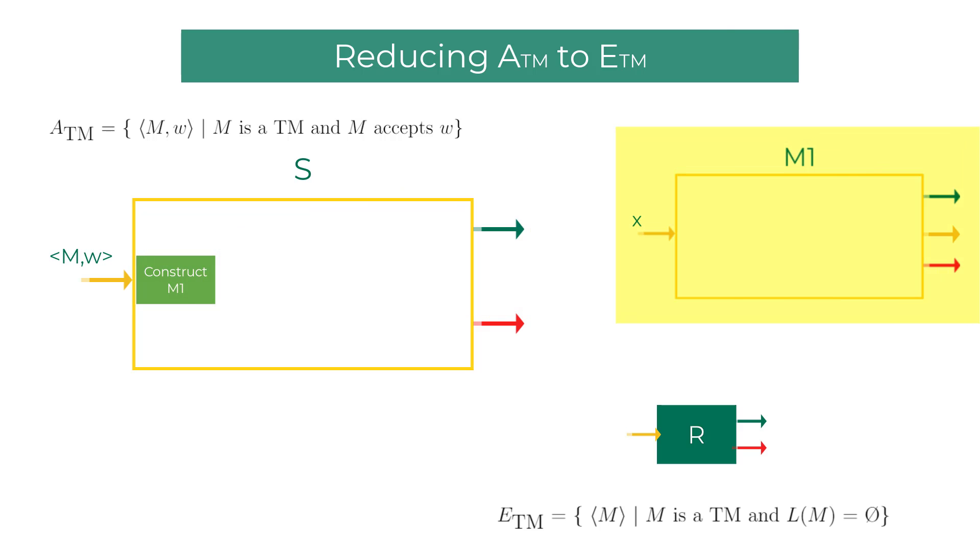This Turing machine M1 can accept, reject, or loop on an input string X. Inside M1, we add a small subroutine that makes sure any string other than W is rejected immediately. We do that by creating this bypass connection from the if-else subroutine to the reject state of the Turing machine M1. If the input string is W, then we simulate the machine M on W using the universal Turing machine. Now the universal Turing machine can accept, reject, or loop on the word W.